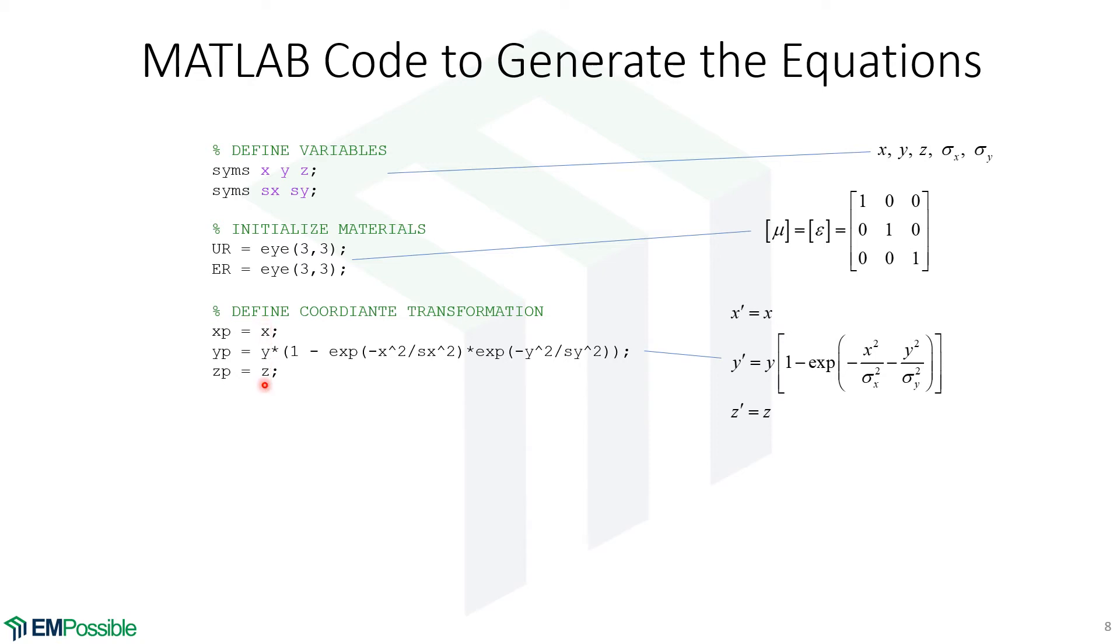Now we define our coordinate transform. So X, Y, Z is the original coordinate system. And X P, Y P, and Z P is our transform coordinate system. The P for prime. Since MATLAB doesn't give us a prime symbol for variables, I'm just using P. And I've literally just typed in the definition of our coordinate transform. And that ends up here. These are symbolic variables.